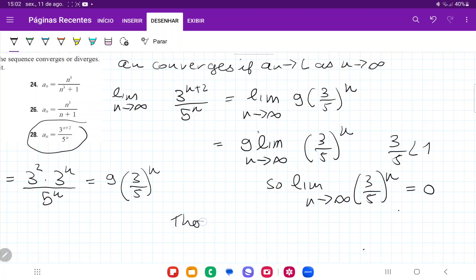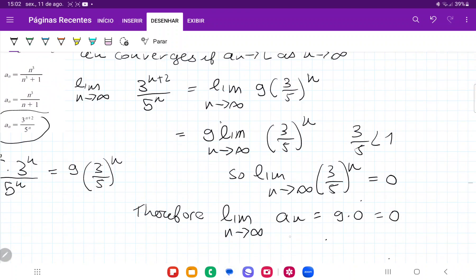Therefore, the limit as n approaches infinity of a_n is equal to 9 times 0 is equal to 0. So, the limit exists, and so a_n converges.